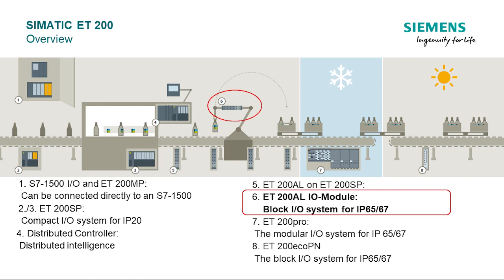You will notice there are a couple of different types of I/O that look very similar. These are the ET200EcoPN — that's number 8 — and the ET200AL, shown as number 5 and number 6. We will discuss the differences between them in the next couple of slides.